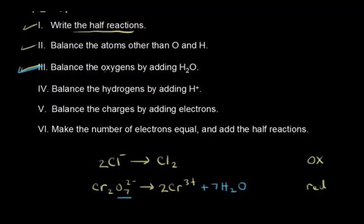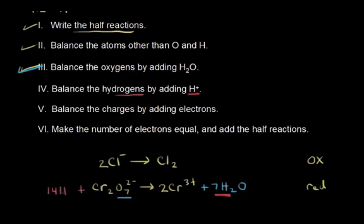Step four: balance the hydrogens by adding protons. The oxidation half reaction needs no changes. In the reduction half reaction, adding water introduced hydrogens on the right side — a total of 14 hydrogens (seven times two). We balance that by adding 14 H+ to the left side of the half reaction. Step four is done.